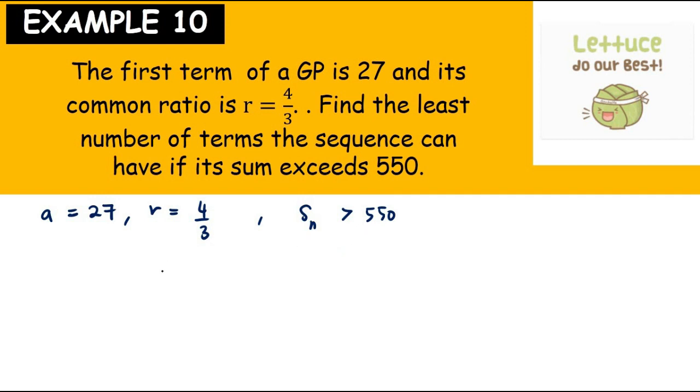Since we have R to be greater than 1, we use the formula A in brackets R to the power of N minus 1, over R minus 1, greater than 550. So A here is 27, R is 4 over 3 to the power of N minus 1, with 4 over 3 minus 1, greater than 550.